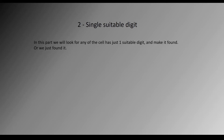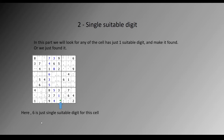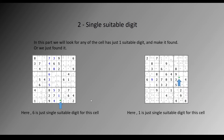Another sub-part is the single suitable digit method. Here, we look for any cell that has just one suitable digit and mark it as found. For example, in this example, 6 is the only suitable digit for this cell, and 1 is the only suitable digit for another cell. That means this cell is 6 and that cell is going to be 1.